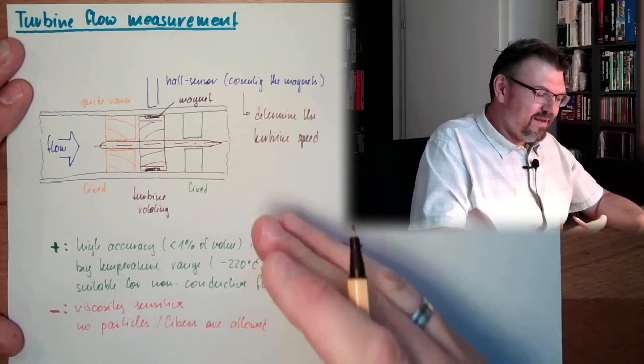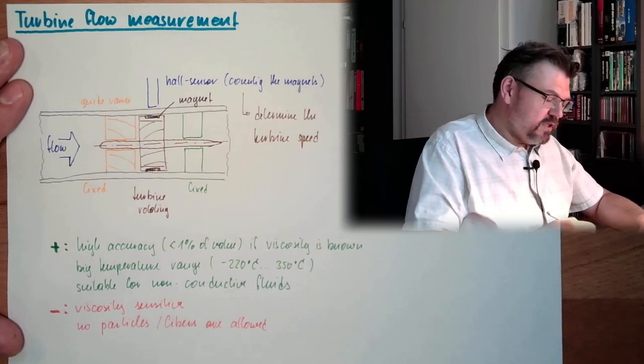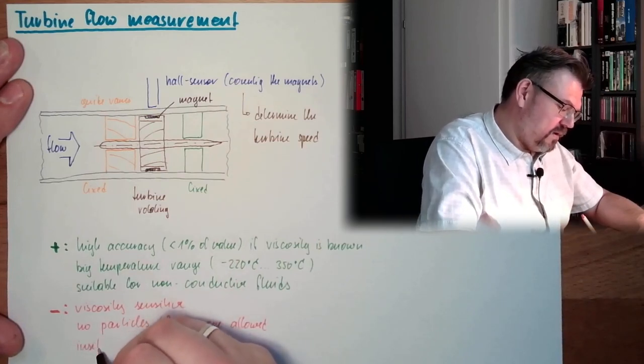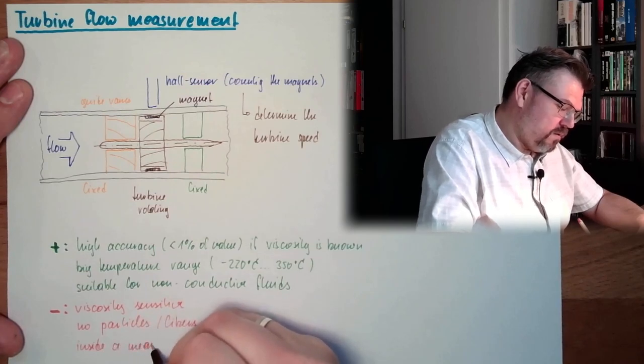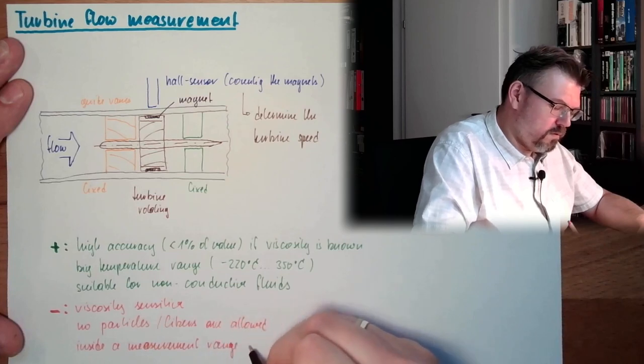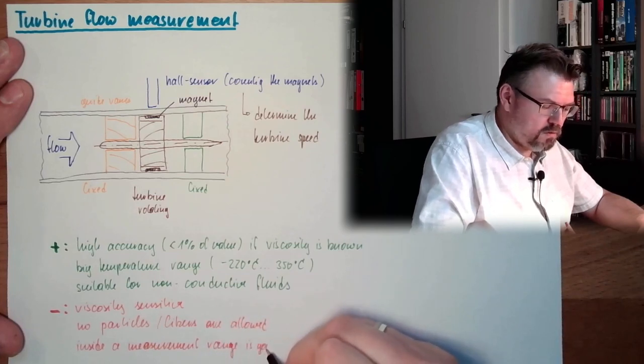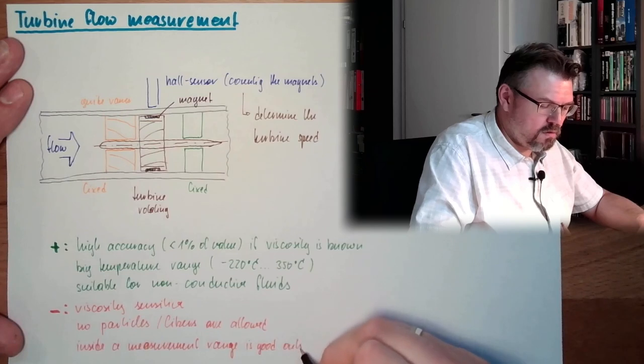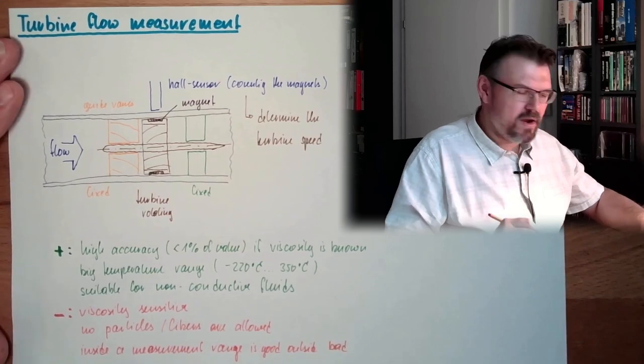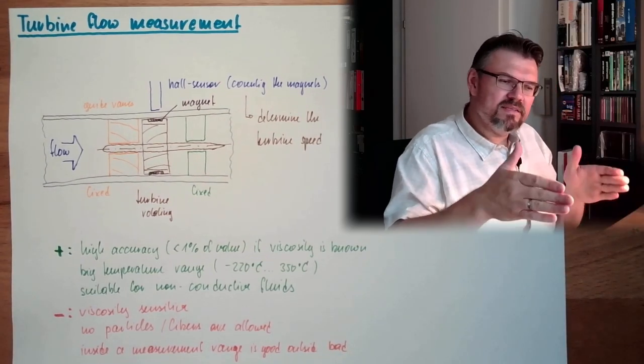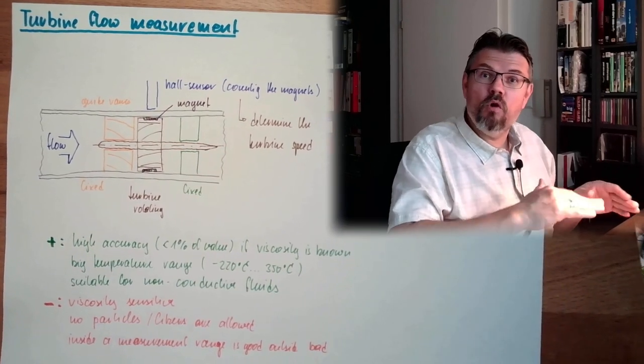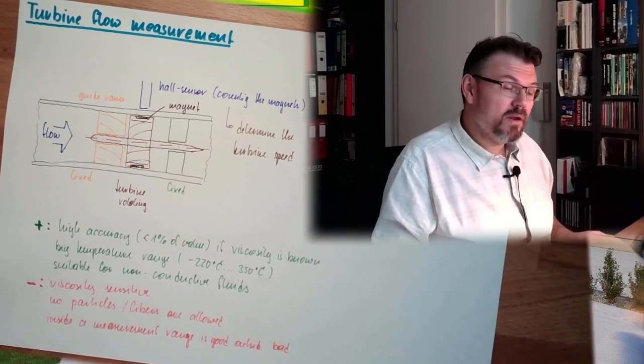And then there's this high accuracy. We only reach this in a certain measurement range inside. Range is good. Outside, bad. And almost very bad already. So inside this design area of the turbine flow measurement, you're fine. If you're too low or too high with the flow, this accuracy is dropping rapidly.